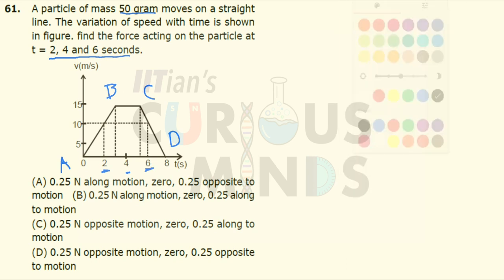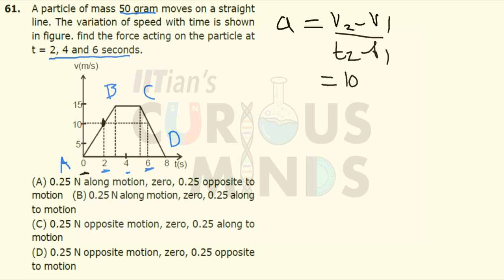So let us first calculate between A and B. I am calculating the first section. Acceleration will be equal to V2 minus V1 divided by T2 minus T1. V2 here is 10, V1 here is 0. So 10 minus 0 divided by T2, T2 here is 2, and T1 is equal to 0. So the acceleration will be equal to 5 meter per second square in the first case.